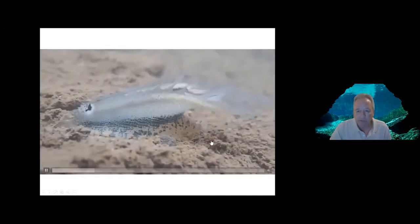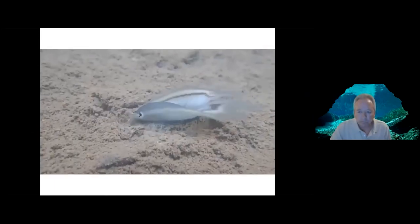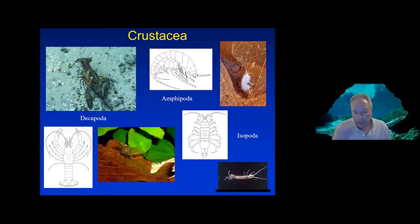Here you can see a mussel embedded in the sand — a female with her mantle exposed above the surface — and you'll see fish darting in trying to attack what appears to be a prey item. At some point the female will release those glochidia and they become attached to the gills of the fish.